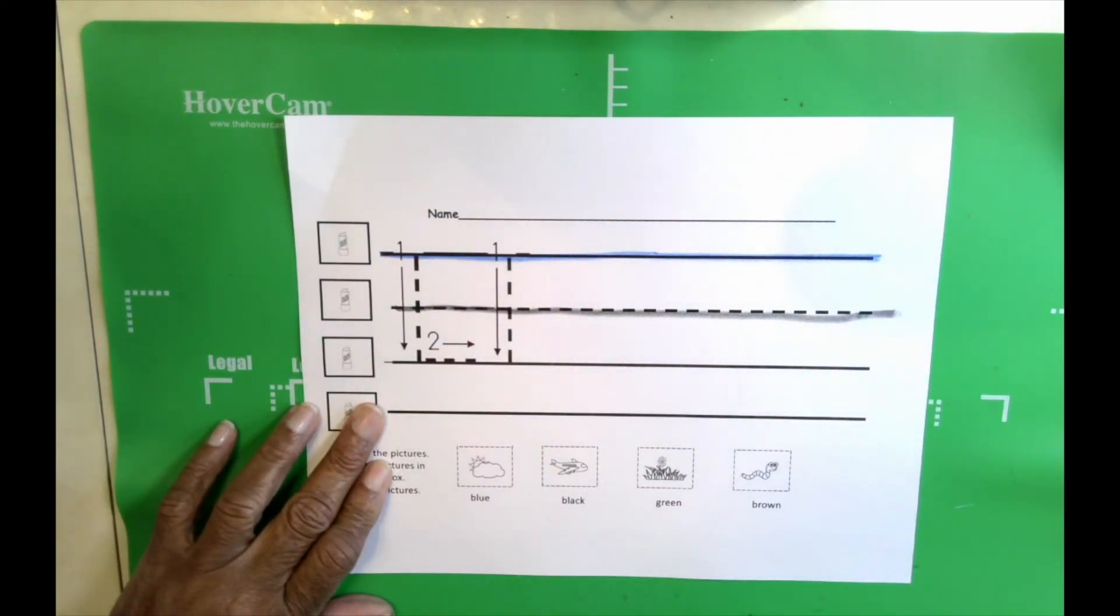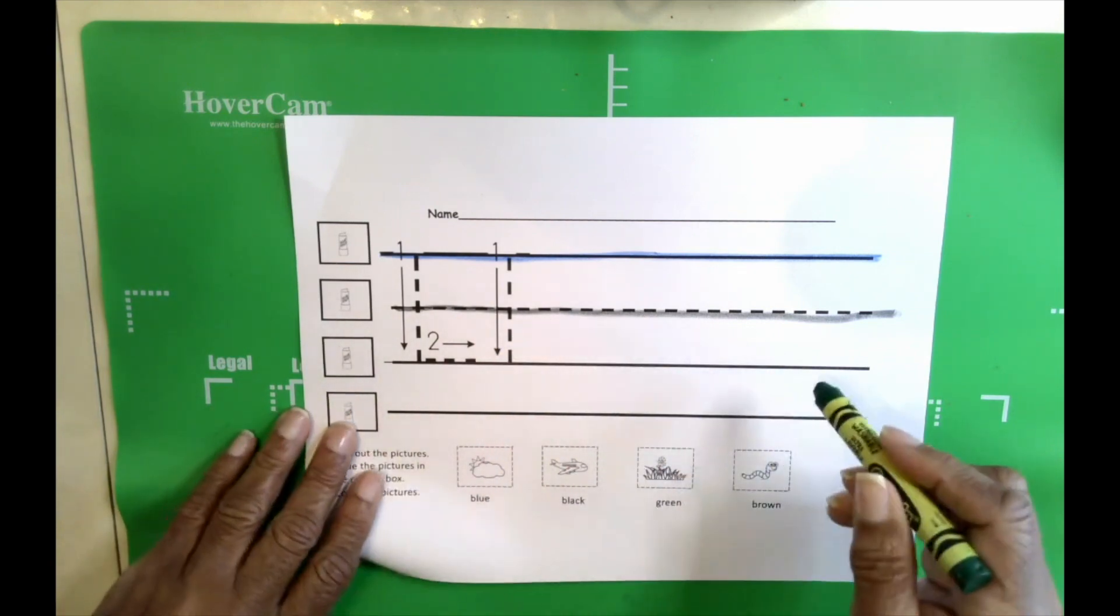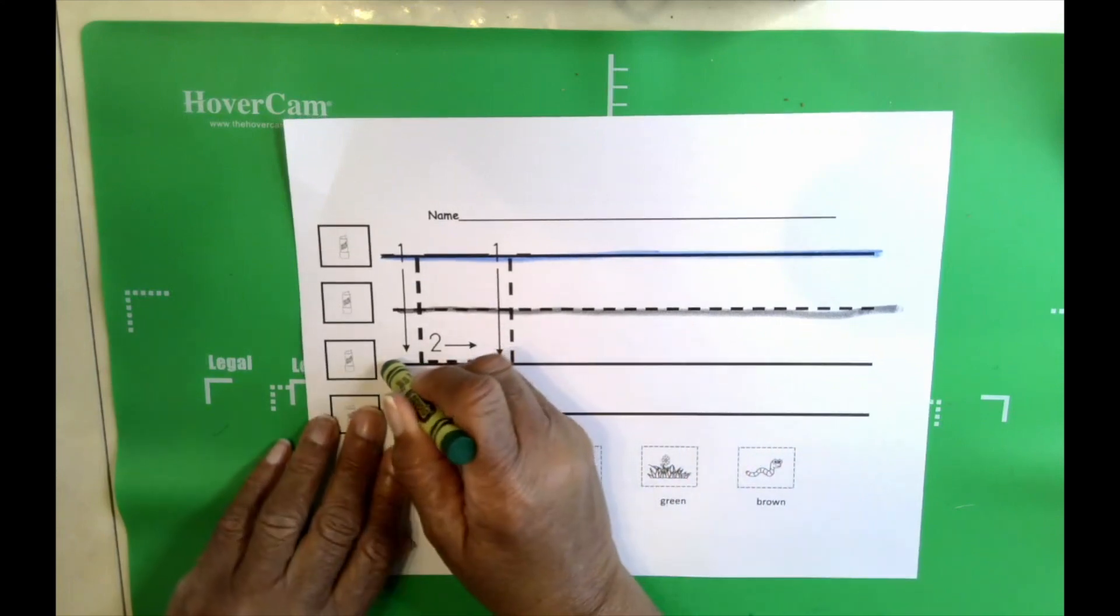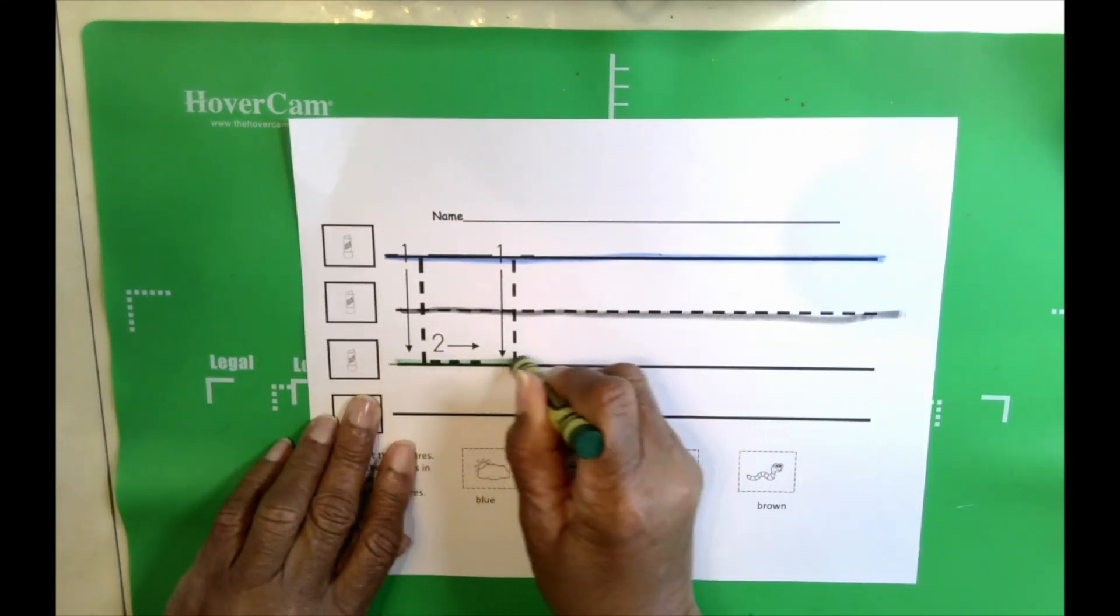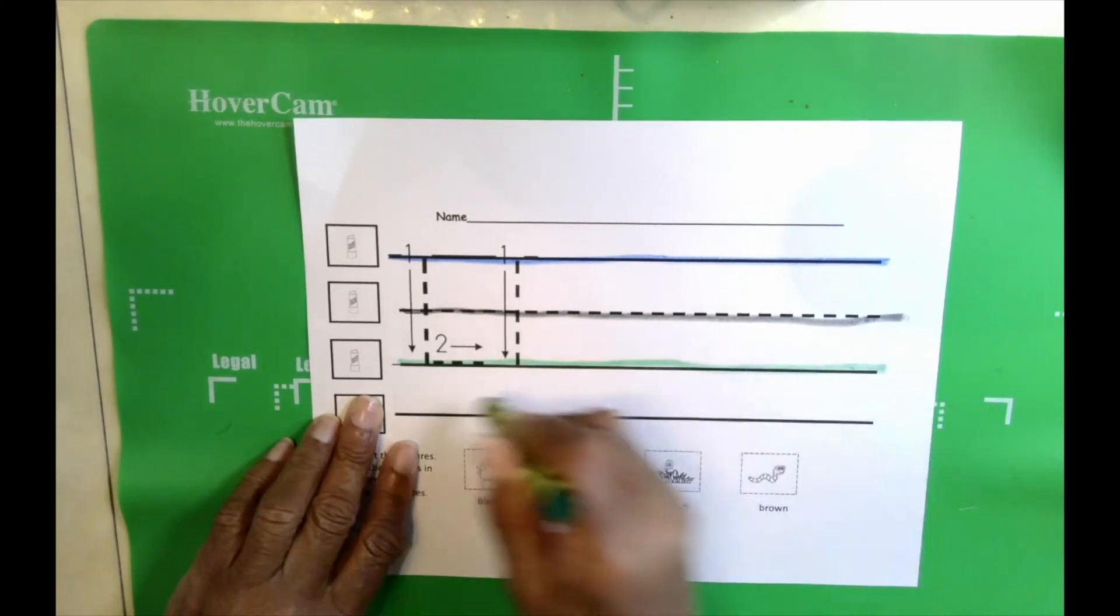Show me green boys and girls. Here's green. We're going to color our third line green. This is the grass line. When you think of grass, what color is grass? Green.